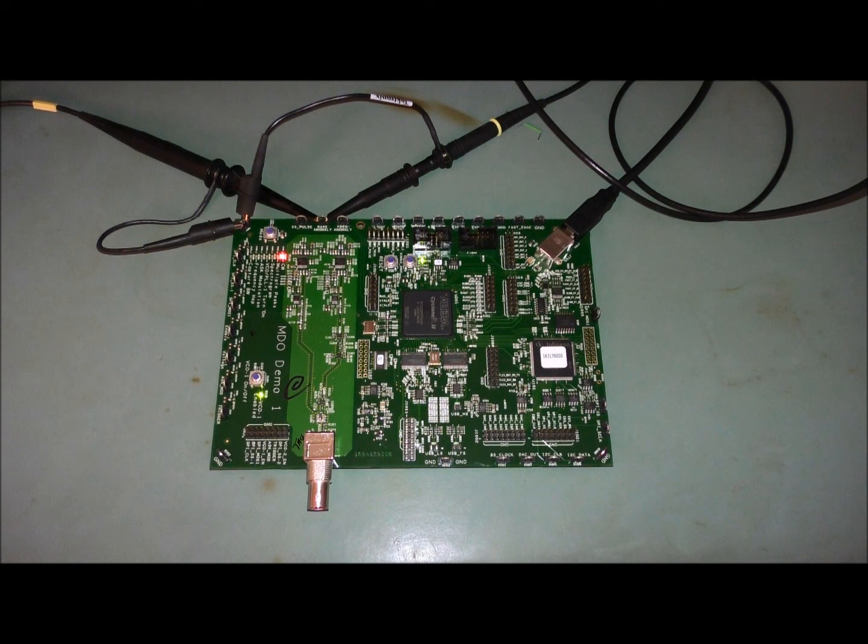What happens is there's a signal train of maybe three pulses where every now and again, I think like once a second or maybe a little bit more often than that, one of the pulse trains doesn't quite reach up to its full five volts. I'll show you what that looks like on the scope in a minute.